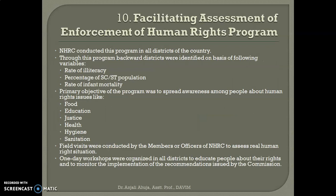NHRC conducts a program for facilitating assessment of enforcement of human rights in all districts of the country so that assessment of various human rights programs can be done. Through this program, backward districts were identified on the basis of rate of illiteracy, percentage of SC and ST population, and rate of infant mortality. The primary objective of the program was to spread awareness among people about human rights issues like food, education, justice, health, hygiene, and sanitation.